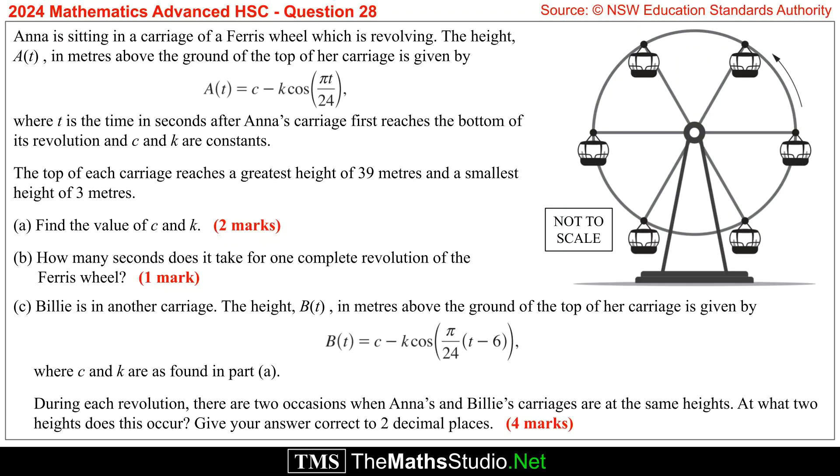The top of each carriage reaches a greatest height of 39 metres and a smallest height of 3 metres. Part A: Find the value of c and k.